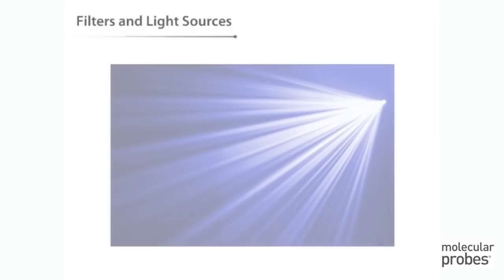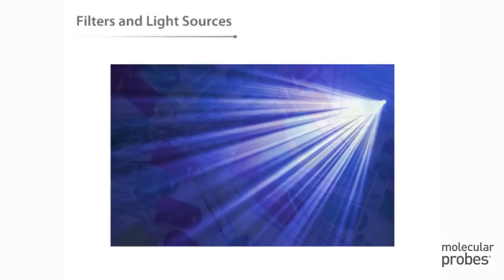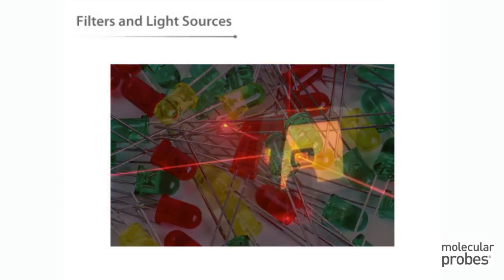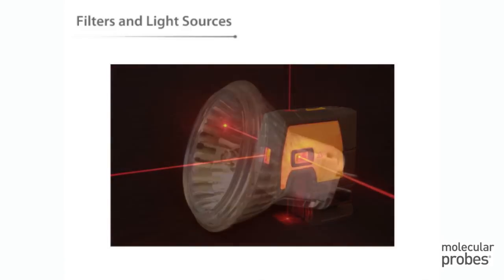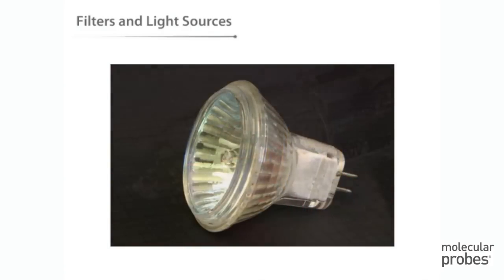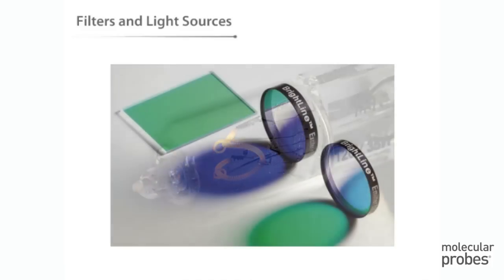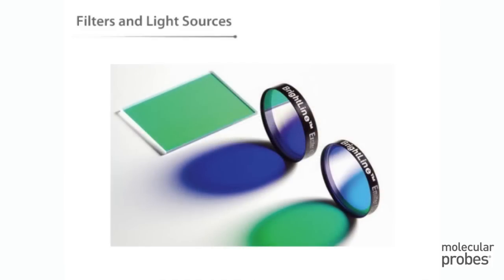Fluorescence requires a source of excitation energy. There are several main types of light sources that are used to excite fluorescent dyes. This tutorial introduces the types of commonly used excitation sources and presents some of the ways that filters can be used to optimize your experimental results.